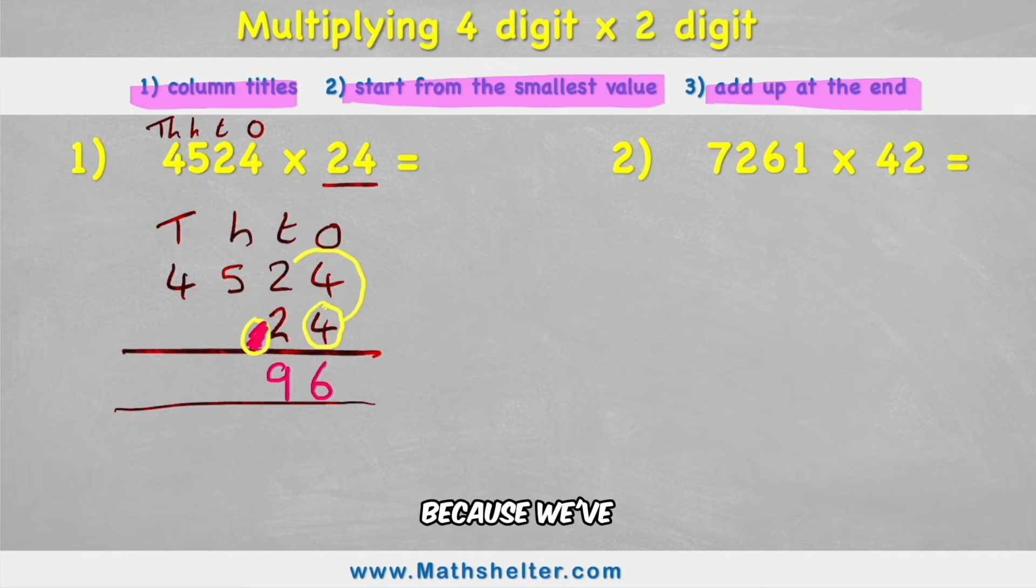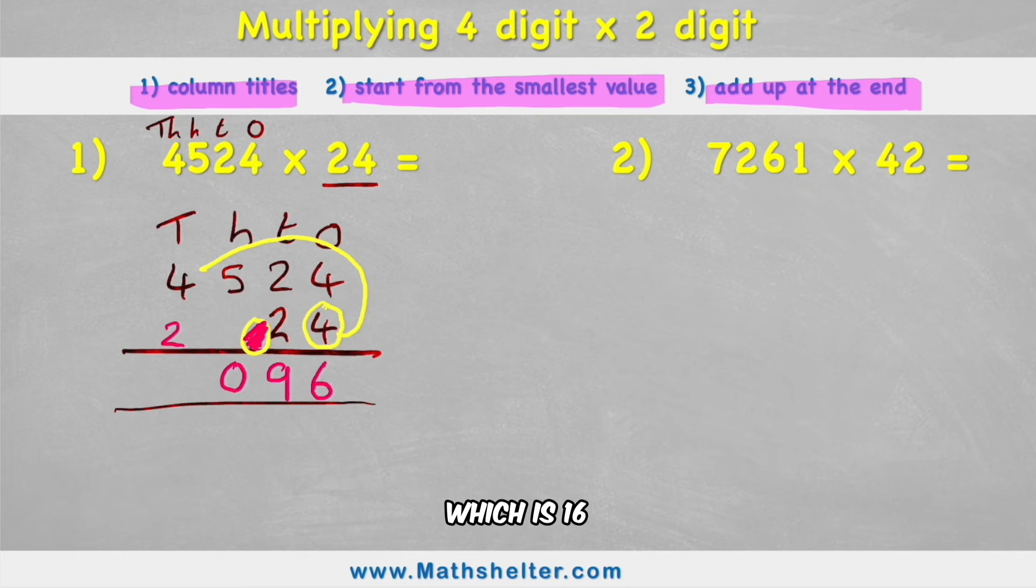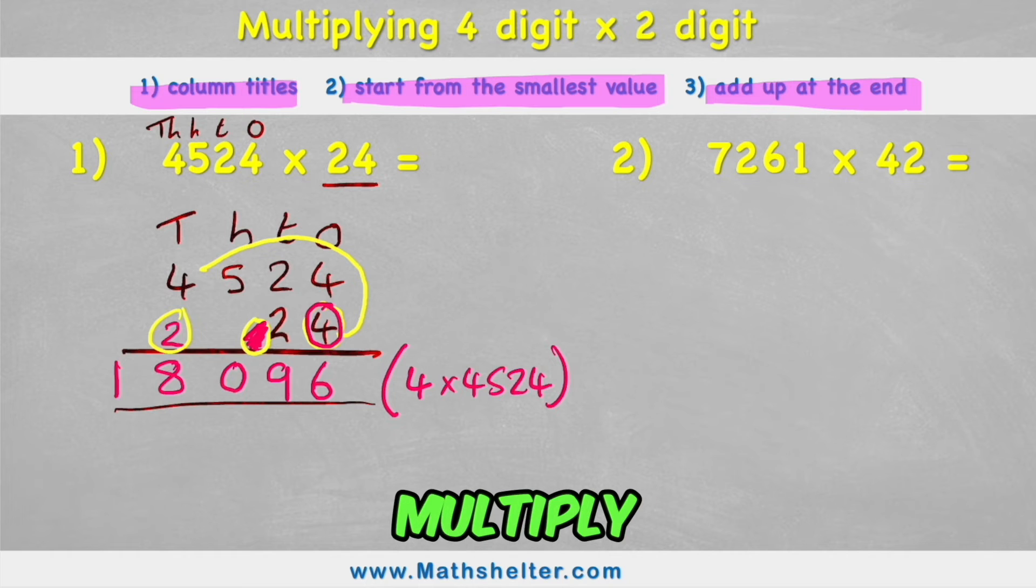Get rid of that one because we've used it. Next question will be four times five. Four times five is 20. So again put my zero into that column and carry the two into the next column. And finally my last question involving this four is four times four which is 16 plus my two is 18. And because I've got no other columns to work out I can just simply put my whole 18 into the answer row ready. So now what I've just done is I've actually solved the question four times 4524.